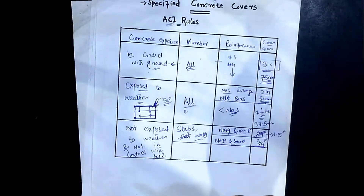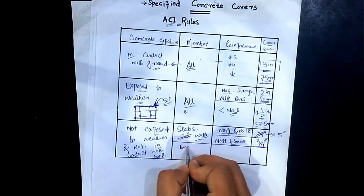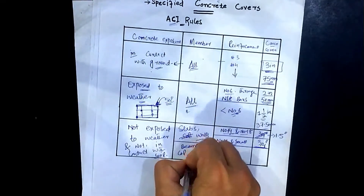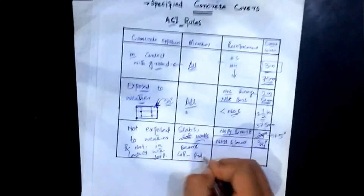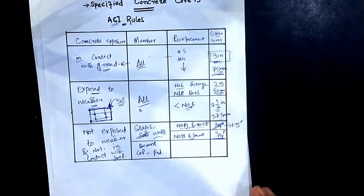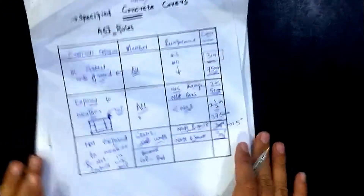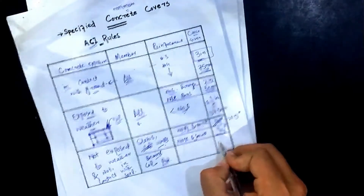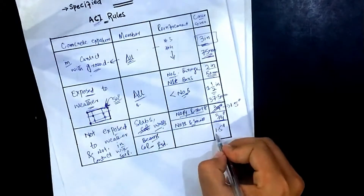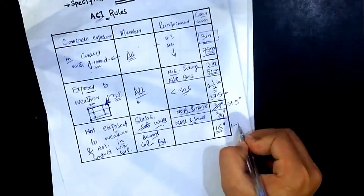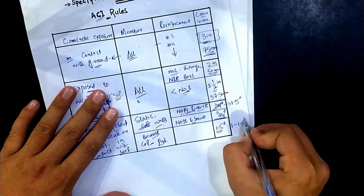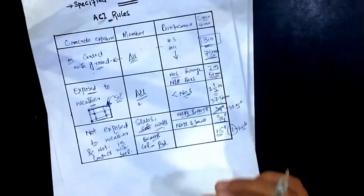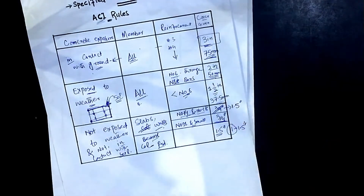For beams, columns, and pedestals that are not exposed to weather and not in contact with soil, the concrete cover is 1.5 inches regardless of the reinforcement used. In some cases a value of 1 inch is also used. Keep these values in mind wherever you use concrete cover.